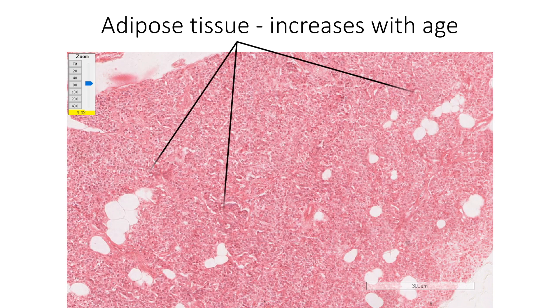After puberty, adipose tissue begins to accumulate in the stroma of the gland. The amount of adipose tissue keeps increasing with age, occupying almost two-thirds of the glandular mass beyond middle age.